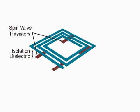The GMR resistors are spin valves with two stable resistance states. A dielectric provides isolation.